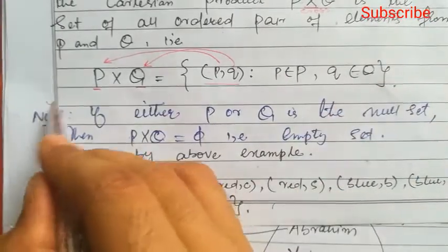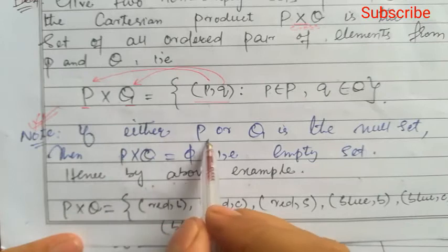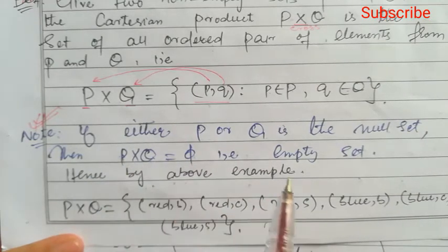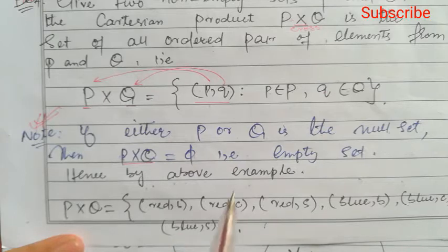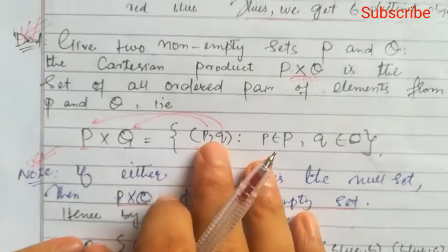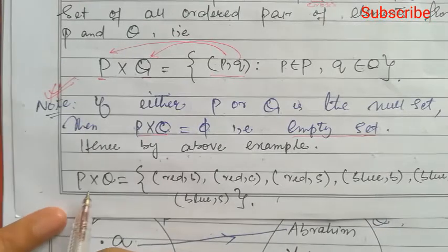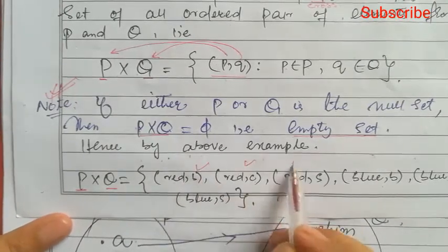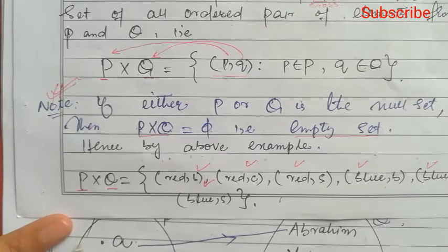One important note: if either P or Q is the null set, then P cross Q is also null set. Remember this. If one of the sets is a null set, then P cross Q is an empty set. Using the above example, the Cartesian product A cross B gives six ordered pairs: (red, B), (red, C), (red, S), (blue, B), (blue, C), (blue, S). That is the Cartesian product of sets A and B.